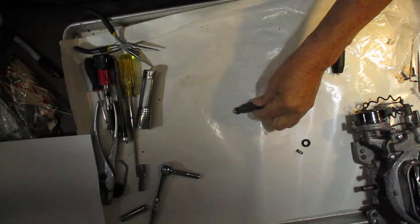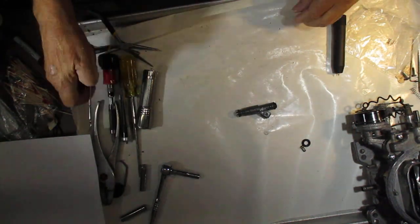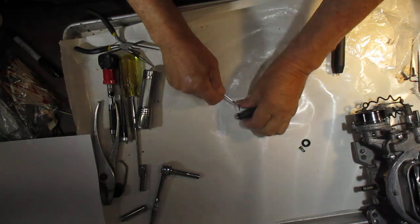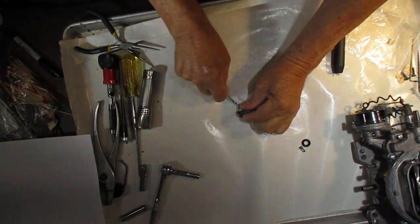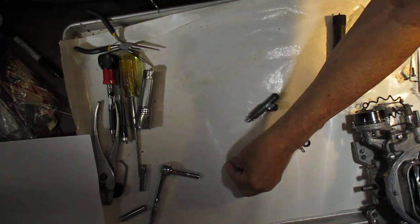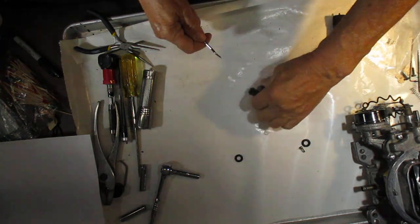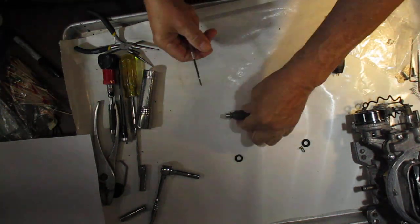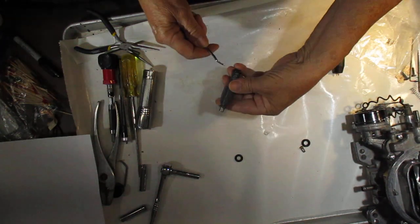So first thing we're going to do is take off the o-rings, and we're going to keep them in order because they could be the same, they could be a little bit offset. So you might take a picture.